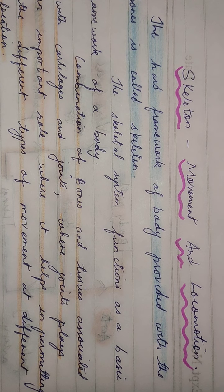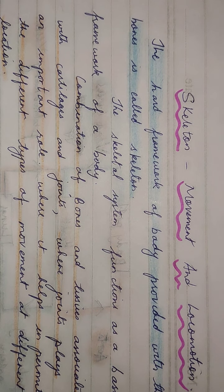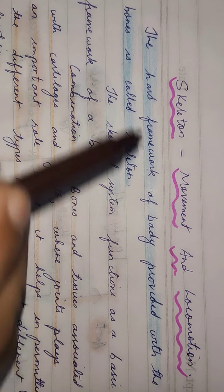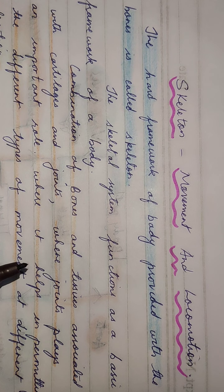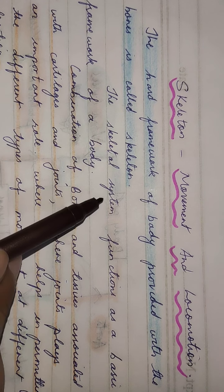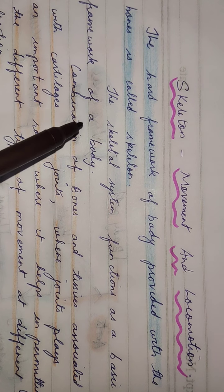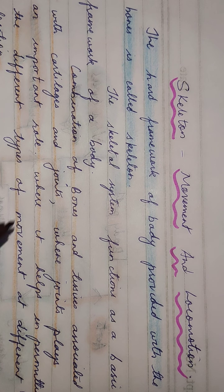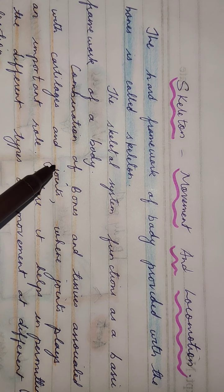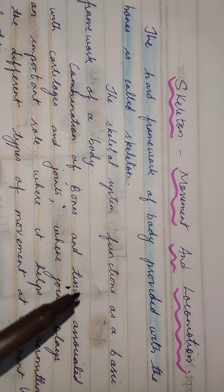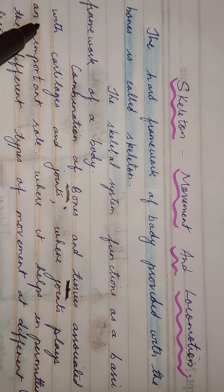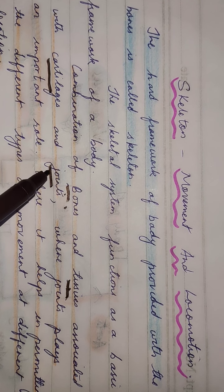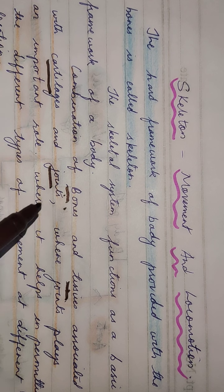The hard framework of the body provided by the bones is called the skeleton. The skeletal system functions as the basic framework of the body, consisting of a combination of bones and tissues associated with cartilages and joints. Bones, tissues, cartilage, and joints are all very important.